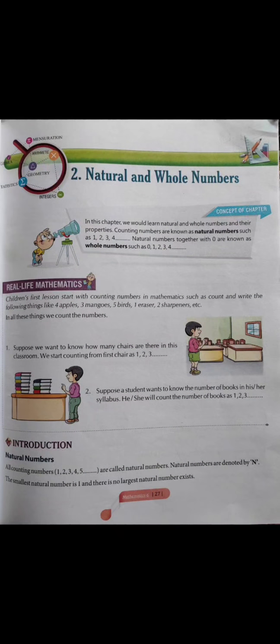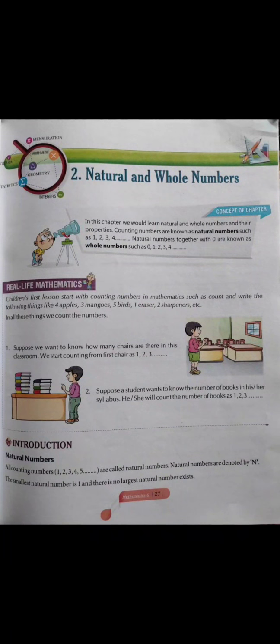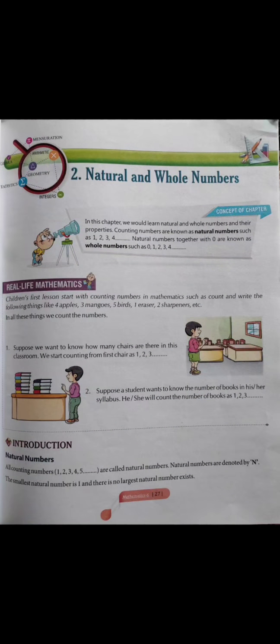Natural numbers are simply the counting numbers. All the counting numbers are known as natural numbers. Jo bhi counting numbers hote hain woh natural numbers hote hain — for example, 1, 2, 3, 4, up to infinity. Natural numbers mein hamara zero nahi aata kyunki zero ko hum count nahi kar sakte.